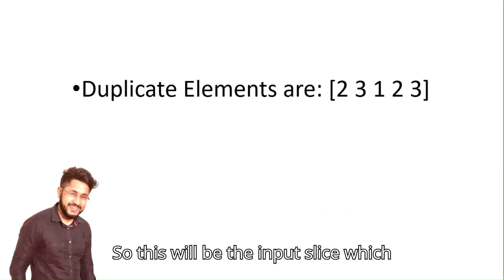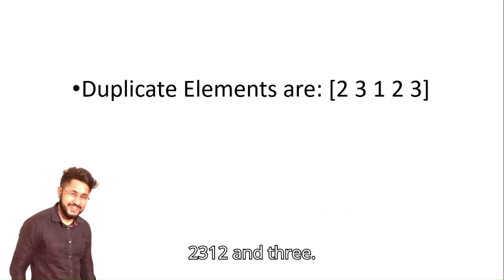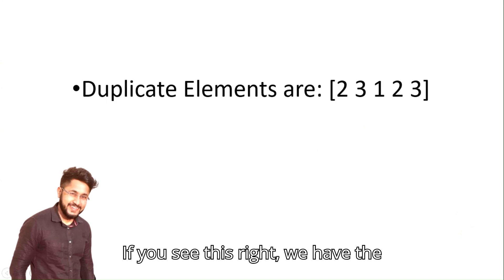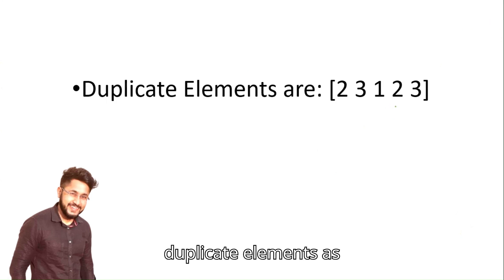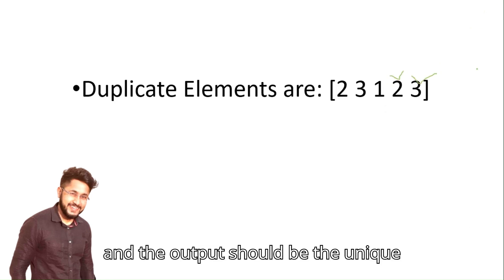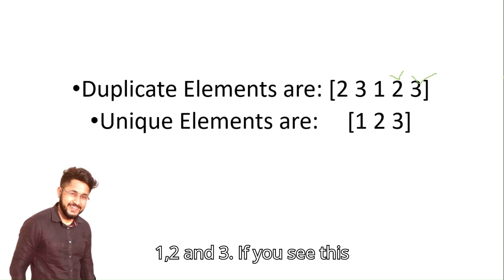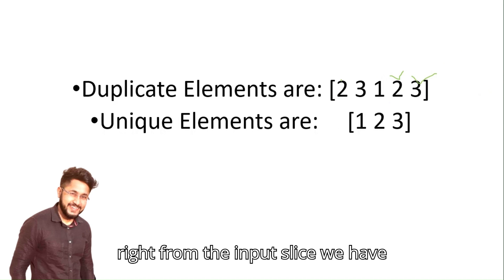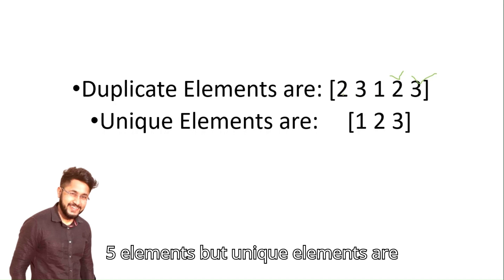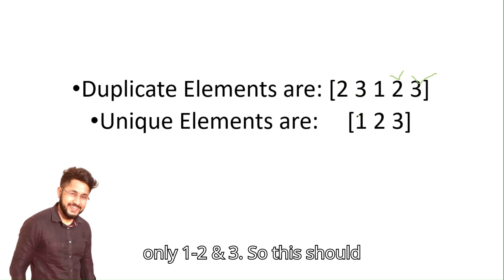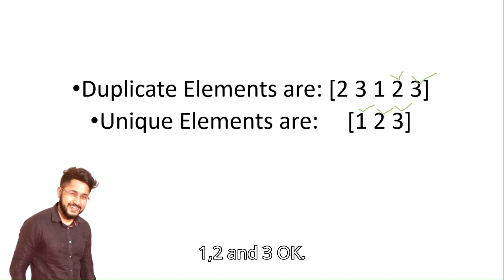This will be the input slice, which will contain duplicate elements: 2, 3, 1, 2, and 3. We have the duplicate elements 2 and 3. The output should be the unique elements from this slice, which should be 1, 2, and 3. So from the input slice we have 5 elements, but unique elements are only 1, 2, and 3.